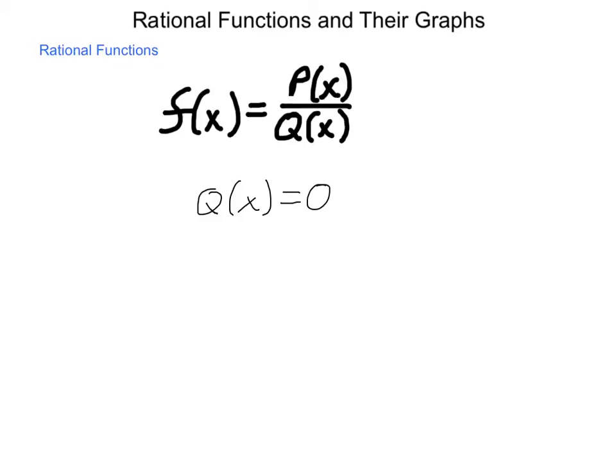Any time that q of x equals 0, we are going to have some form of what is called discontinuity in our graph. If we have a linear on our numerator and a linear on our denominator, we are going to have some sort of break in the graph. How do we find these points of discontinuity?